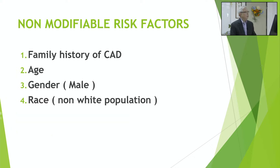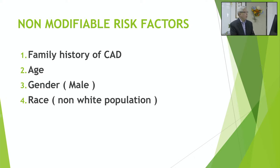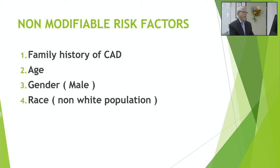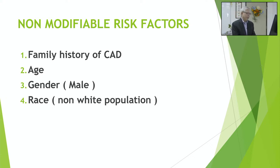Now let's talk about non-modifiable risk factors — things we cannot do anything about. Family history: if your parents had a heart attack before retirement age, or a woman had a heart attack before 65, or a man had heart disease or stroke before age 55, you are considered at-risk and prone to heart problems. Age: unfortunately we cannot do anything about age; as you get older, you naturally have a higher chance of heart problems. Gender: males are more prone to heart disease compared to females.